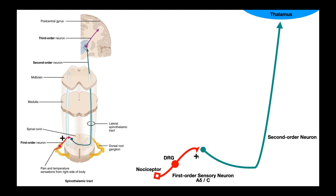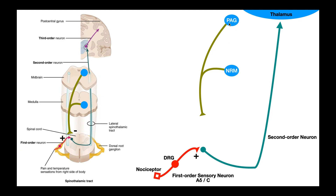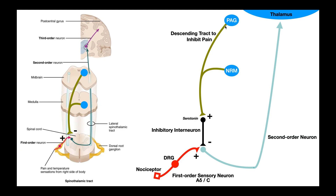Similar to the gate theory, how would we decrease the perception of pain? We need to have a way to shut off, or at least inhibit to some extent, this second order neuron. As this nociceptive information is flowing up to the brain and the brain perceives pain, there are actually two regions of the brainstem that become activated — one's in the midbrain, one's in the medulla. In the midbrain, we have what's called the periaqueductal gray matter, or the PAG. In the medulla, we have the nucleus raphe magnus, or NRM. When the brain starts perceiving pain, these two regions of the brainstem become activated. When the periaqueductal gray matter and nucleus raphe magnus become activated, they activate these descending tracts right here, which actually function to inhibit pain.